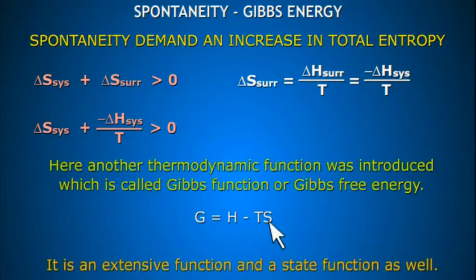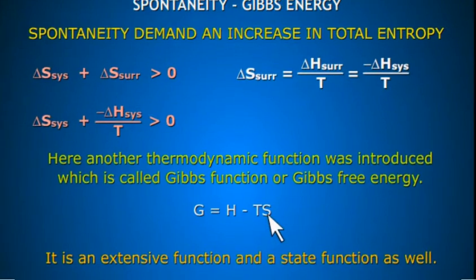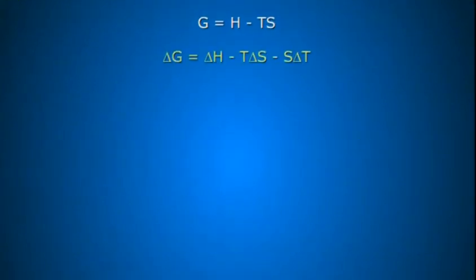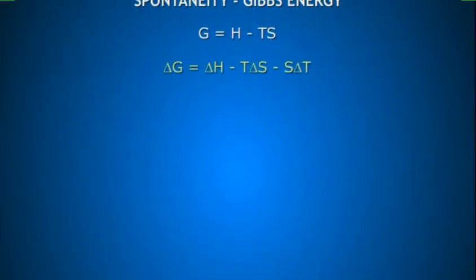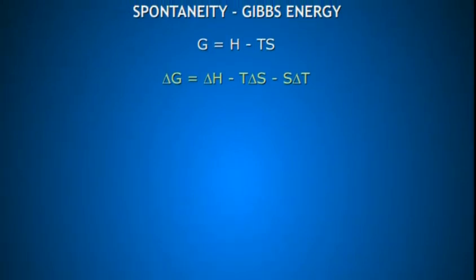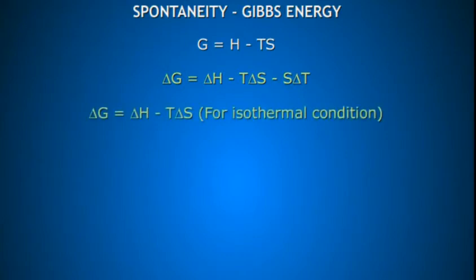Gibbs free energy is an extensive function and a state function as well. The general expression is ΔG = ΔH − TΔS − SΔT. For an isothermal process, ΔG = ΔH − TΔS. If ΔG is less than zero, then the process is spontaneous; otherwise it is not.